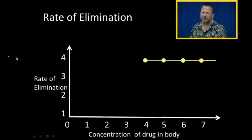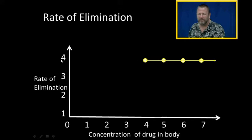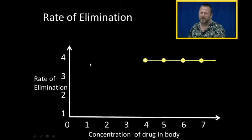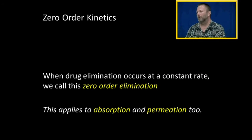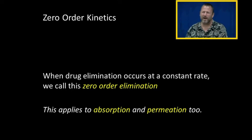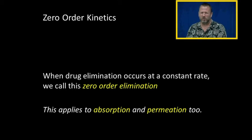If I plot it out, it looks like this: a concentration of four gives a rate of elimination of four; a concentration of five still gives a rate of elimination of four; a concentration of seven still gives a rate of elimination of four. And that's called zero-order kinetics. With zero-order kinetics, when drug elimination occurs at a constant rate, we call this zero-order elimination. It applies to anything, like absorption — if absorption occurs at a constant rate, then that's zero-order absorption.